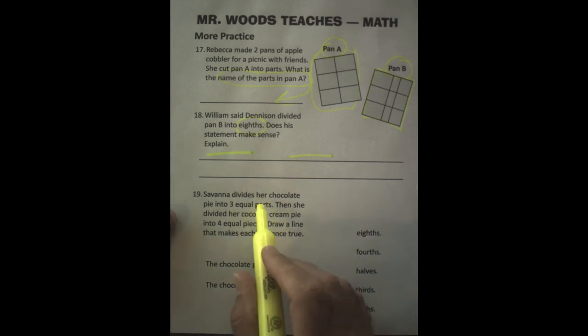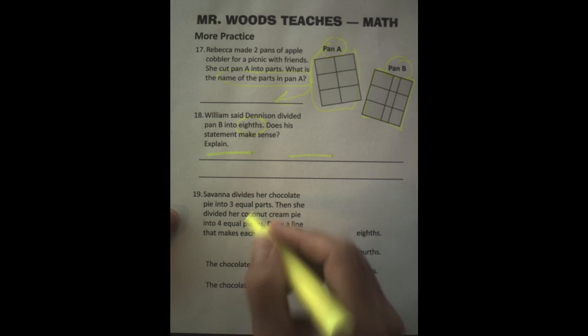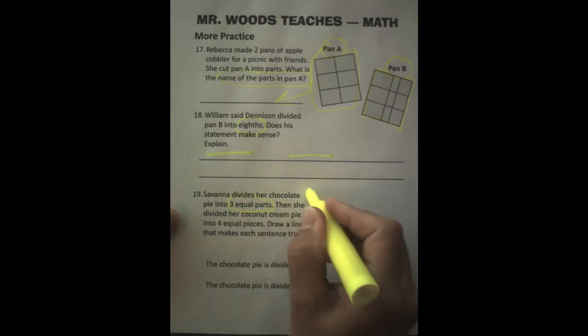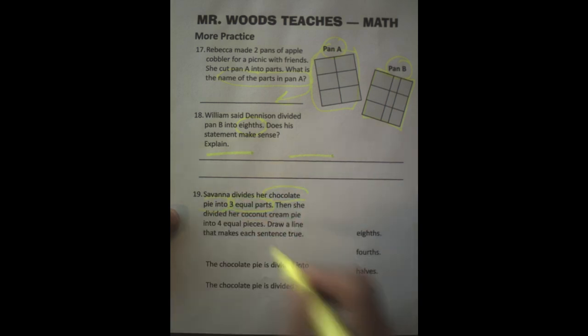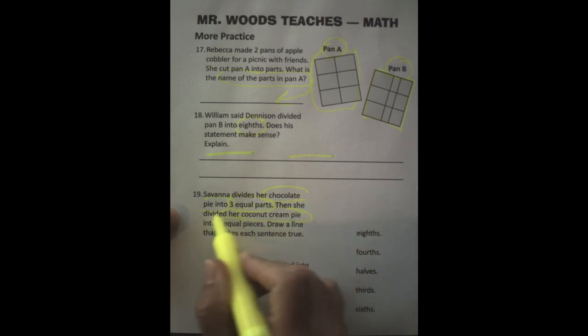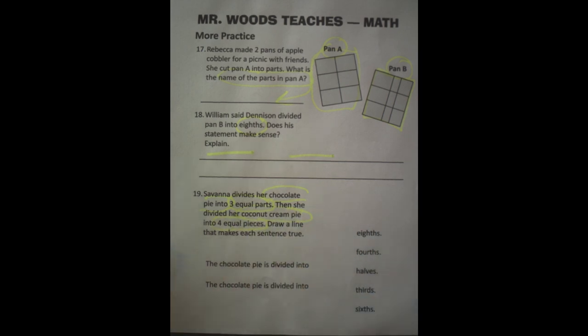Then number 19. Savannah divides her chocolate pie into three equal parts. So that's chocolate pie into three equal parts. Then she divides her coconut cream pie, so there's coconut cream pie, into four equal pieces. So you have to match the sentence to one of these words here to complete the sentence correctly.